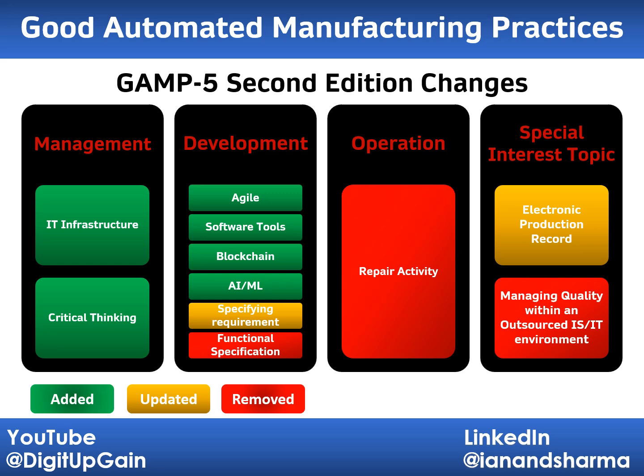The GAMP 5 guide organizes all appendices into four sections: Management, Development, Operation, and Special Interest topics. In the 2nd edition, changes have been color-coded as follows: new additions are marked in green, updates in orange, and removals in red. So let's discuss in detail.